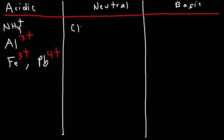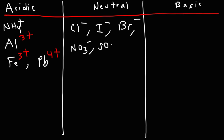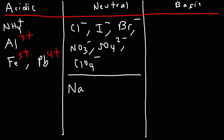Neutral ions are conjugate bases of strong acids. HCl is a strong acid, so Cl- is neutral. HI is a strong acid, so iodide is neutral. HBr is a strong acid, so Br- is neutral. We also have nitrate, sulfate, and perchlorate as neutral ions. That's why it's important to know which acids are strong acids — because then you know which ions are neutral. There are also some neutral metal cations, particularly the Group 1 metal cations: sodium+, lithium+, and potassium+.